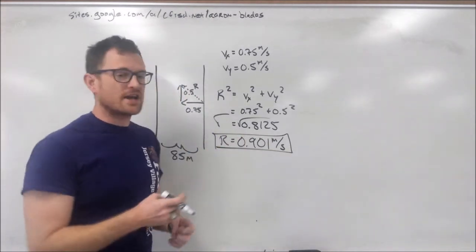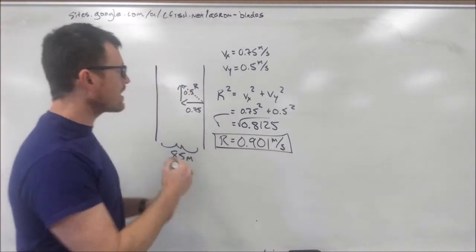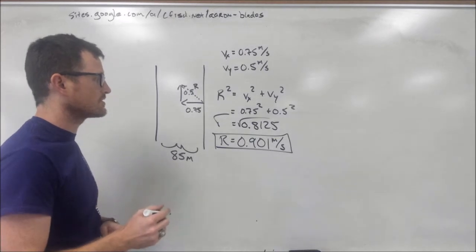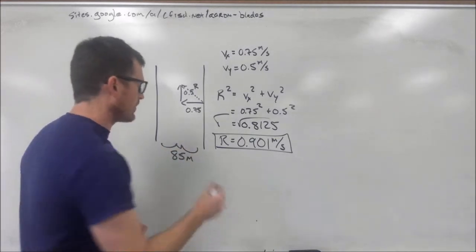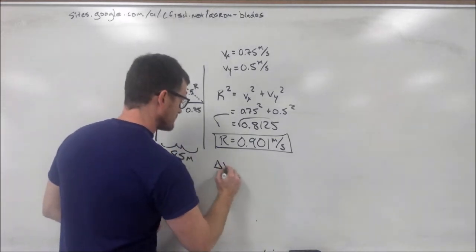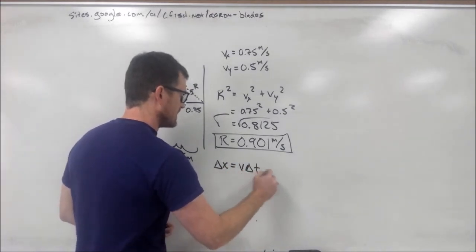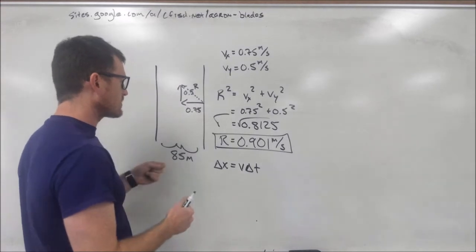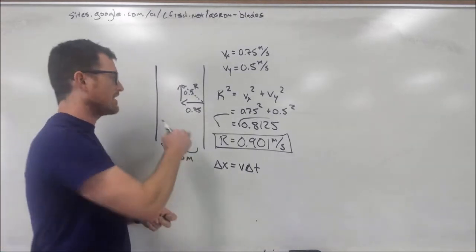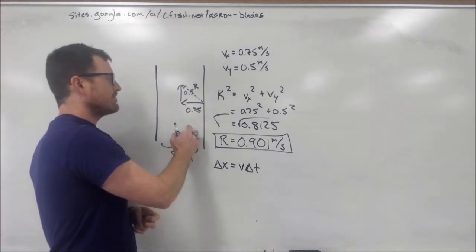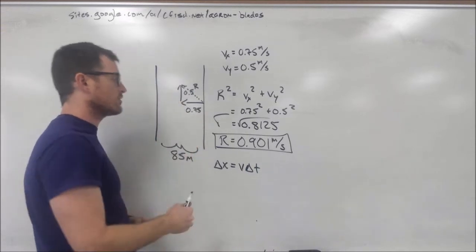Now, the next question that it asks in the problem is, how long does it take the turtle to cross the river? This one's really simple. We take our standard displacement equation, delta x equals v delta t. Since we're talking in the x direction, we also remember that the velocity in the x direction is not affected in any way by the vertical velocity.